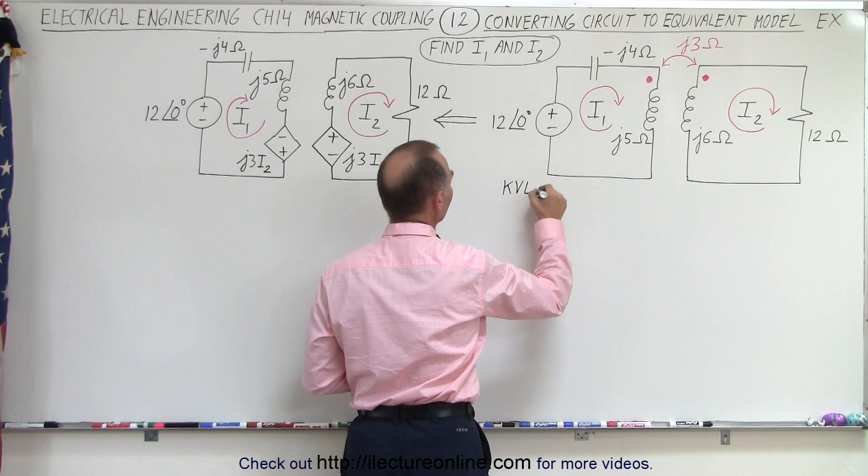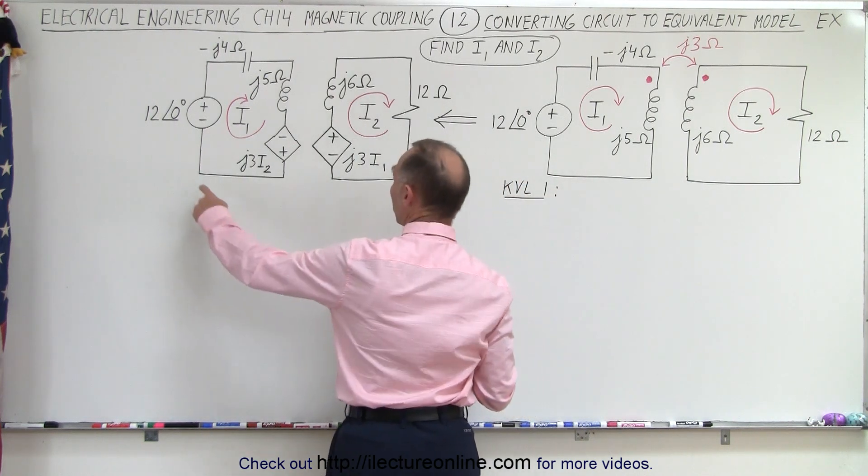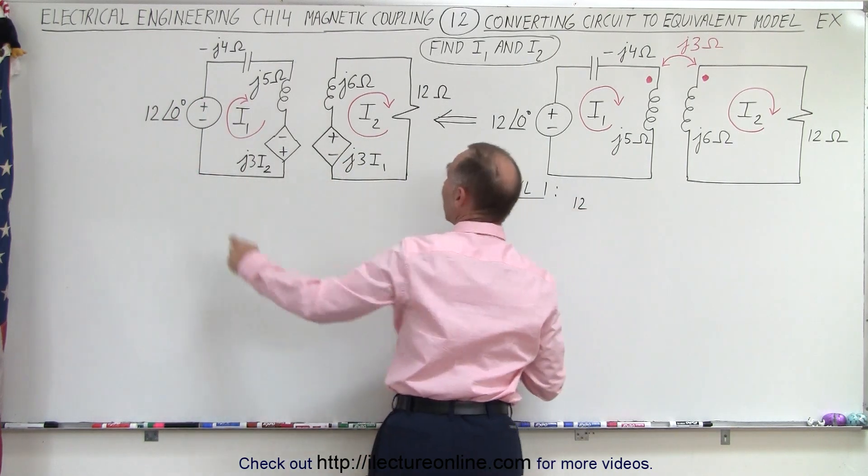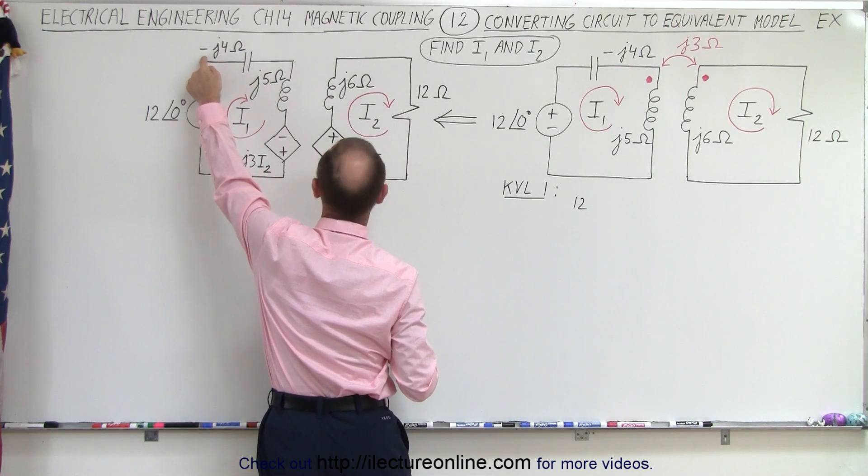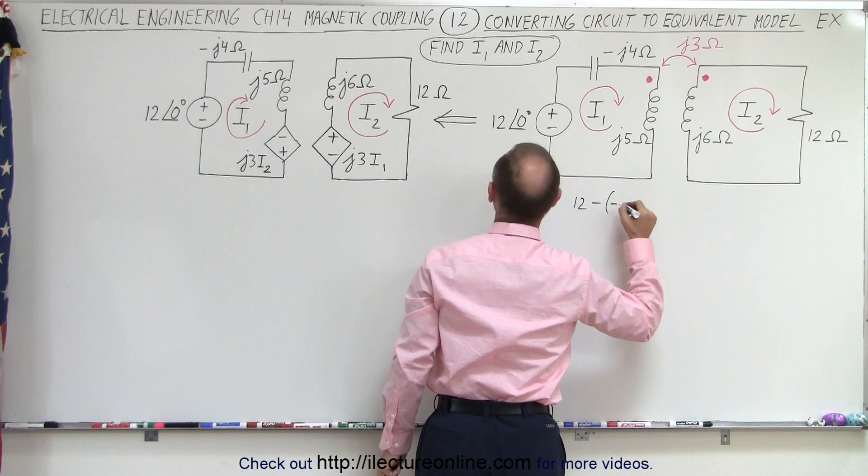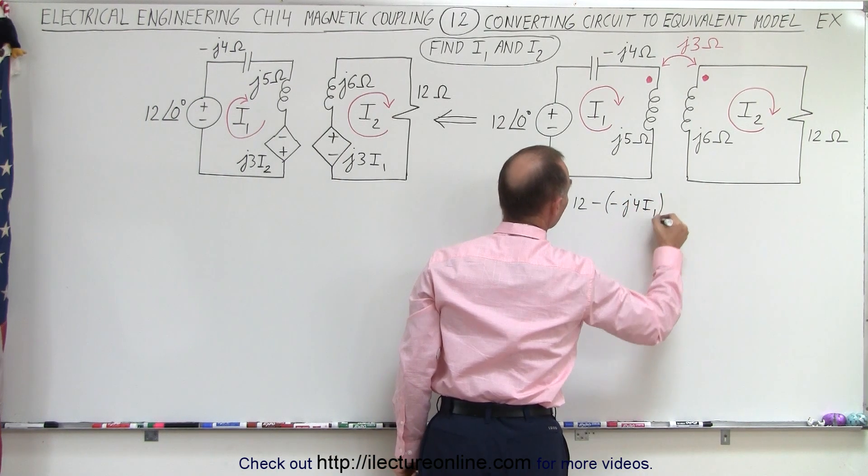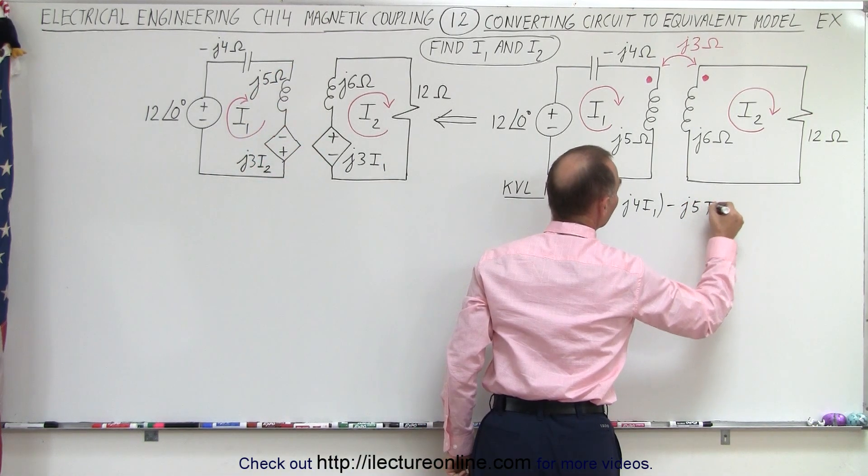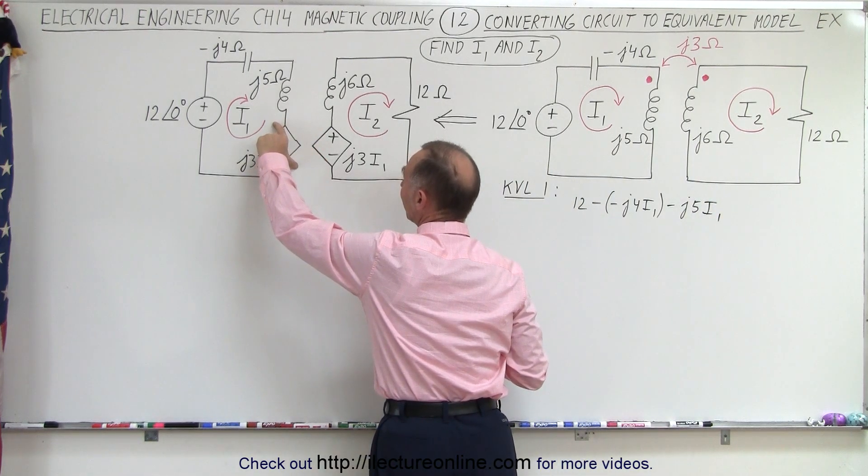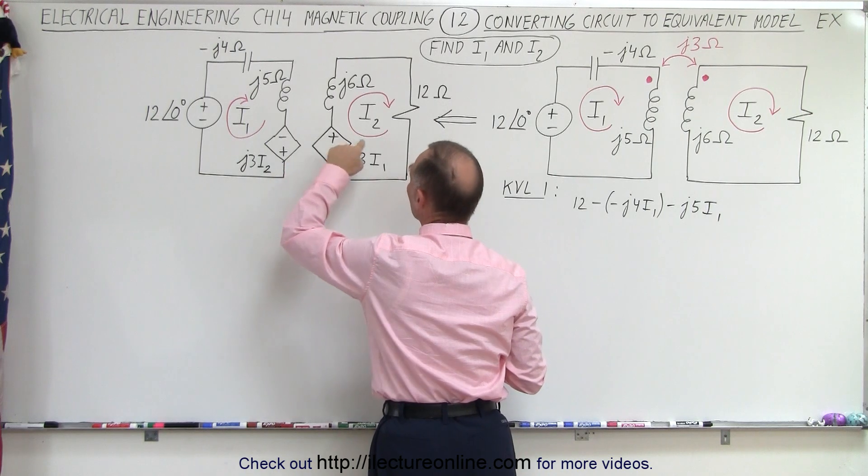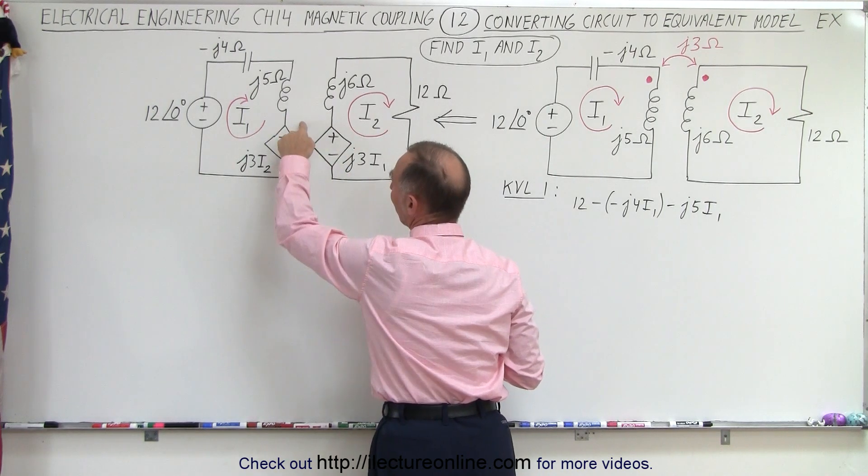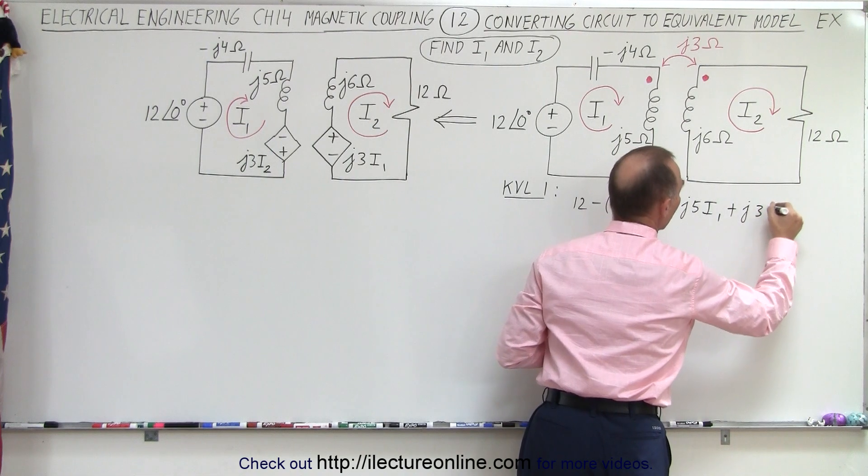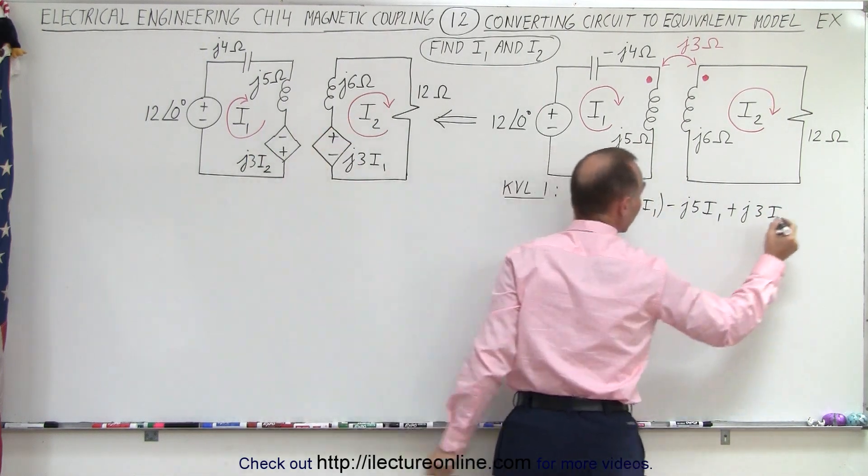So first on loop 1, we're going to do KVL for loop 1. We sum up all the voltages from here to here. That's a gain of 12 volts at 0 degrees phase angle, so that's 12. Here we have a voltage drop, but notice we have a negative reactance, so it's minus a negative J4 times I1. Then we have a voltage drop across here, so we have minus J5 times I1. And then we have a voltage gain. This is what we call the induced voltage from the other circuit and the mutual coupling here. So we have a voltage gain of plus J3I2. And so when we add up all the voltages, it adds up to 0.